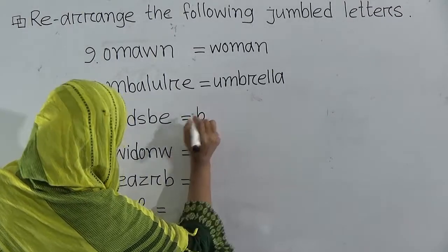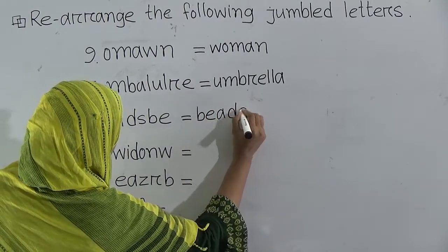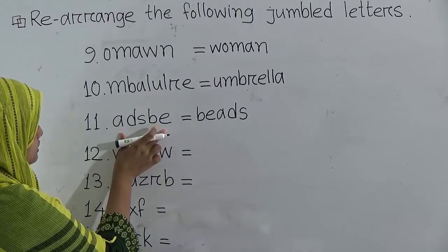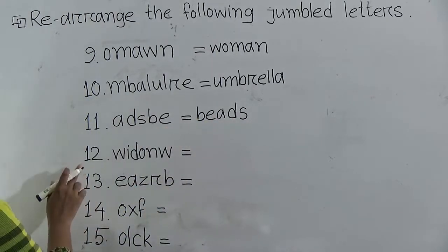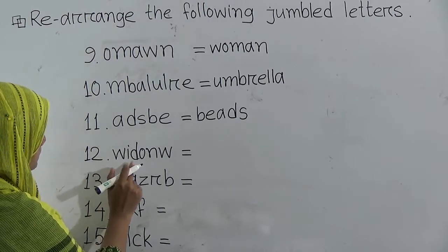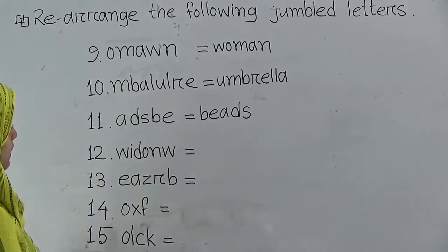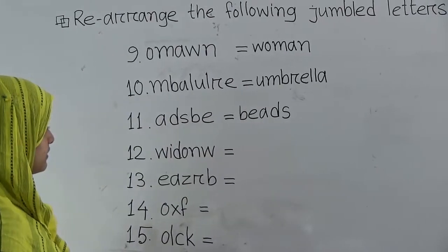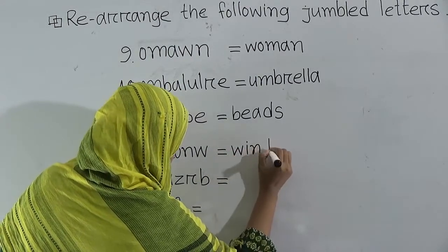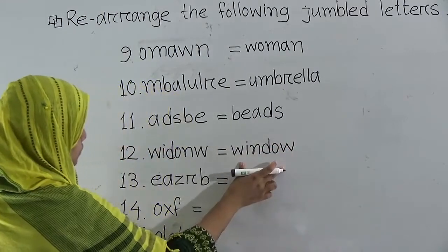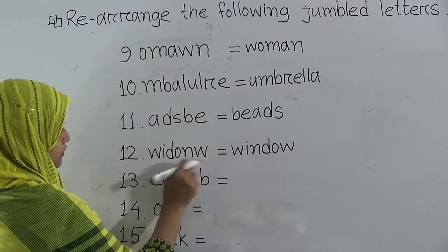Number 11: the given letters are A, D, S, B, A, E. If we arrange them we get B-E-A-D-S — 'beads.' Number 12: the given letters are W, I, D, O, N, W. Students, try to guess the word — this is very common. Try with me: W-I-N-D-O-W — 'window.' Our word will be 'window.'